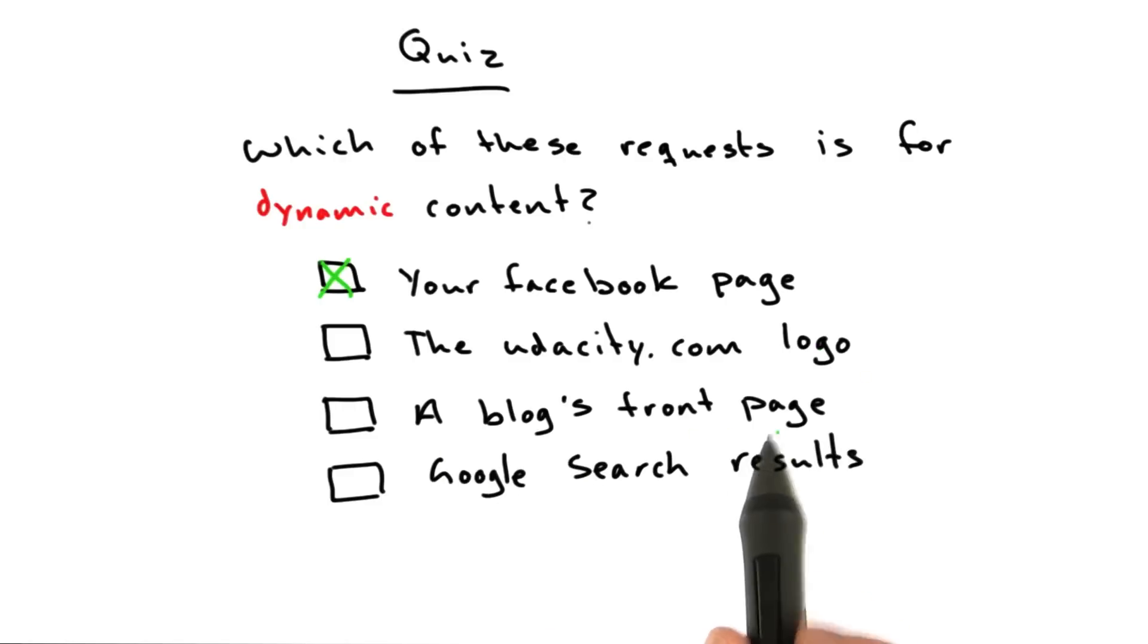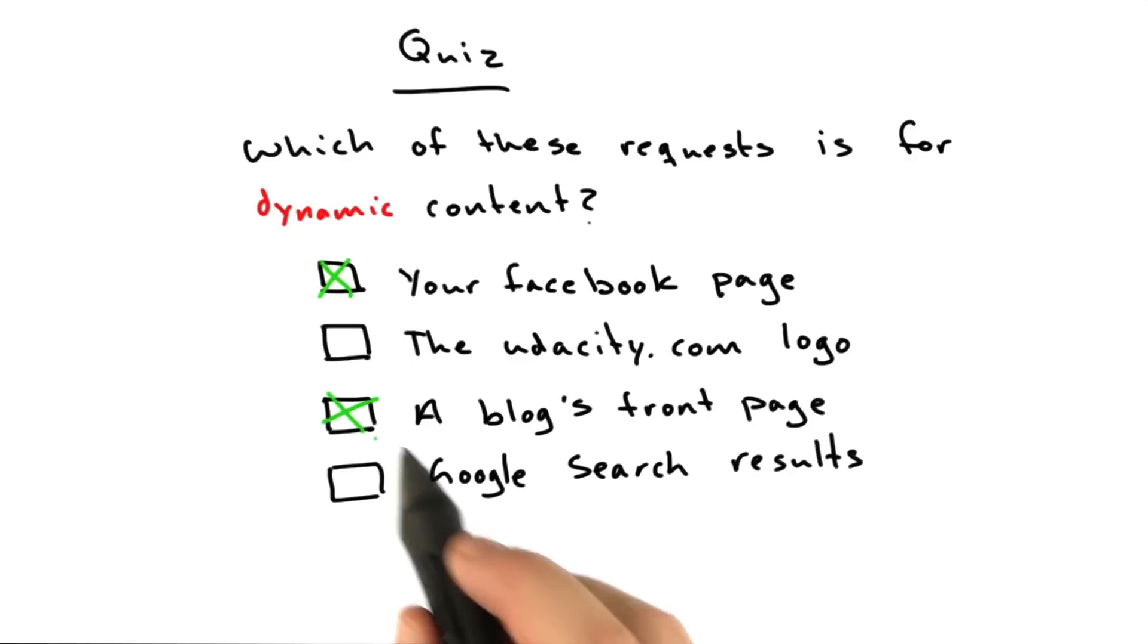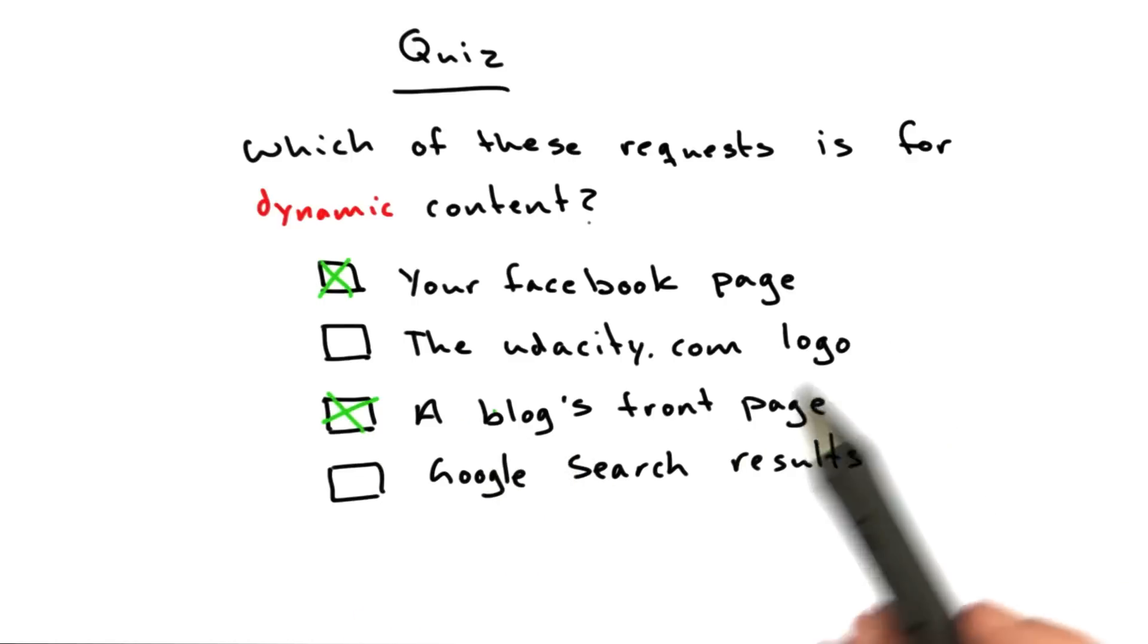A blog's front page, yes, definitely dynamic. A blog's front page probably takes all of the blog entries that somebody has written and collates them together and renders a page that includes the top 10 or whatever.